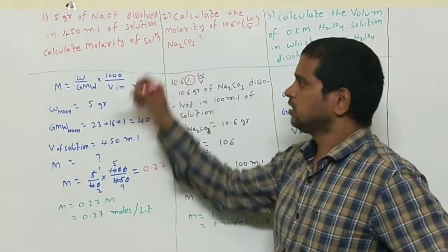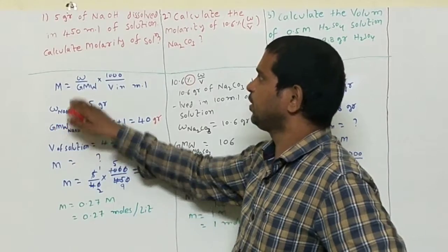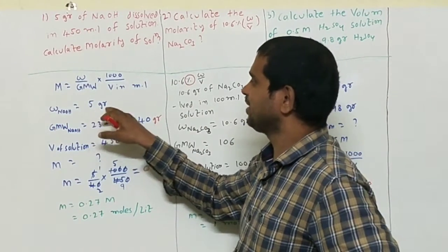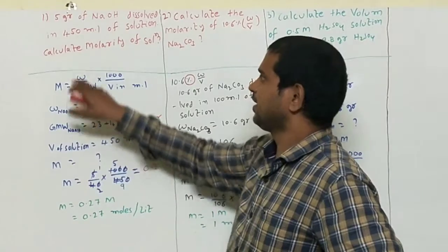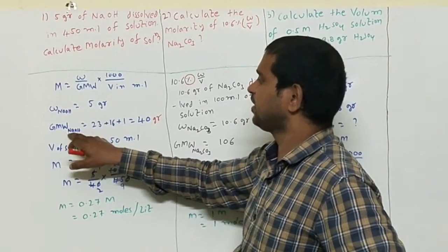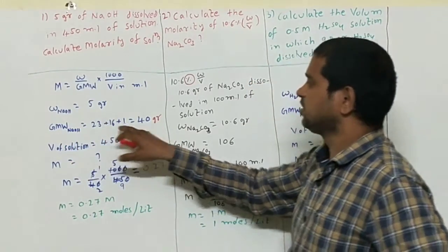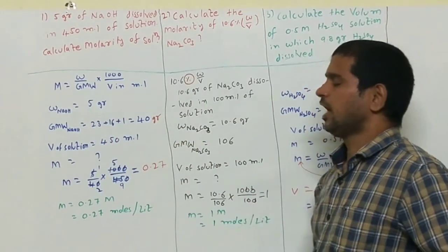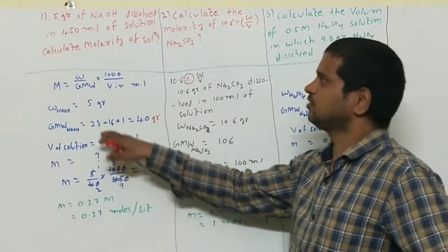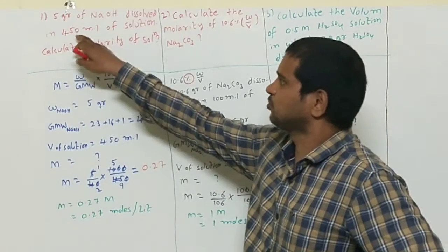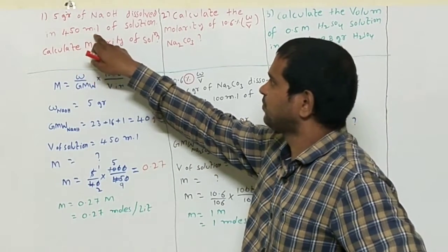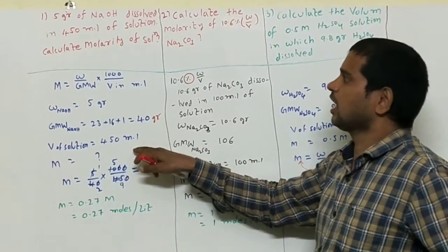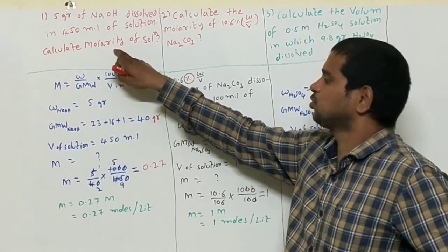From the question, the weight of NaOH is five grams — I am writing that here. The gram molecular weight of NaOH is 40 grams: 23 plus 16 plus 1. The volume of the solution from the given question is 450 ml — I have written the value here. We have to calculate molarity as per the question.